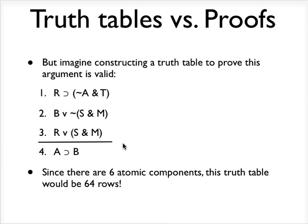So this is an example where we would want to use a proof, because a proof is going to allow us to prove that this argument is valid without going to the trouble of constructing a 64-row truth table to do so.